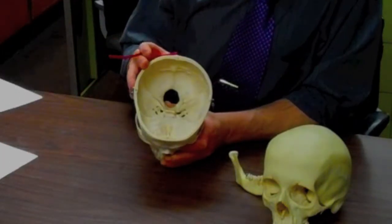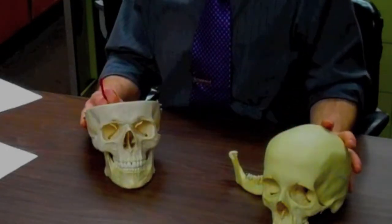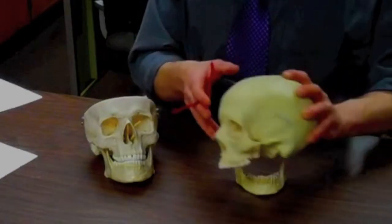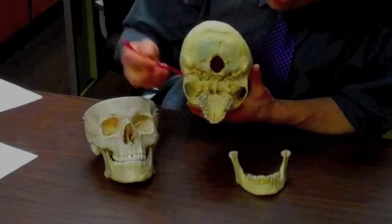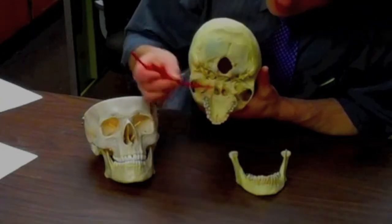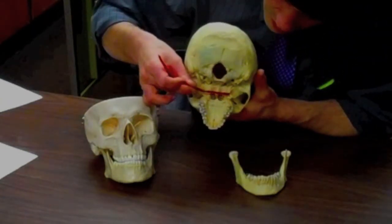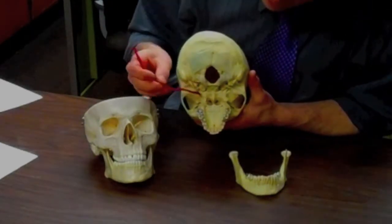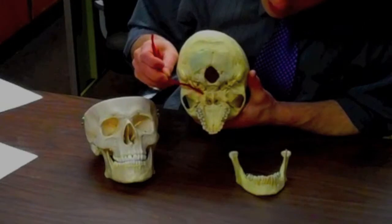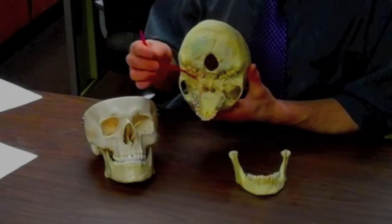And then one feature on the sphenoid bone that we do have looking from underneath, I'll take the real skull here again, underneath we have the teeth, the upper row of the teeth. And right behind the teeth we have these two things sticking down here, these processes, they come down, and those are the pterygoid processes. They have muscles attached to them that help us with chewing.